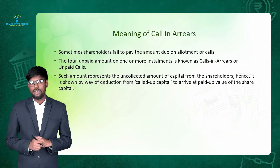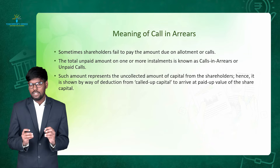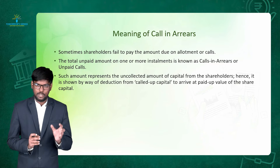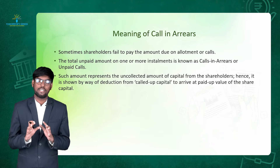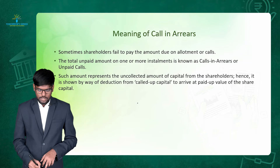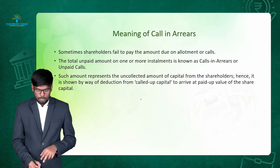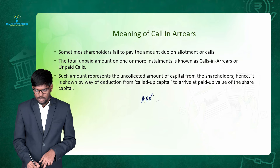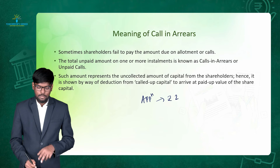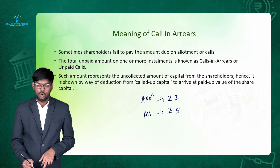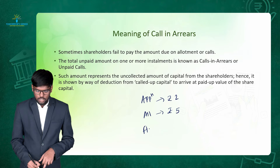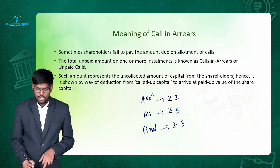We have to understand what is call in arrears. For example, a company is issuing one share at a face value of rupees 10, that is, the company is issuing shares at par. Suppose the company expects that applicants should pay rupees 2 per share at the time of application, rupees 5 from the shareholders at the time of allotment, and rupees 3 from the shareholders at the time of final call.